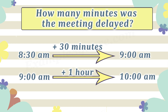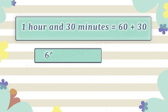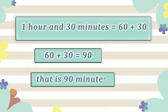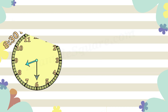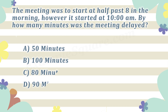That means the meeting was delayed by 1 hour and 30 minutes. 1 hour and 30 minutes is equal to 60 minutes plus 30 minutes — that is 90 minutes. So the meeting was delayed by 90 minutes. Choice D is the correct answer.